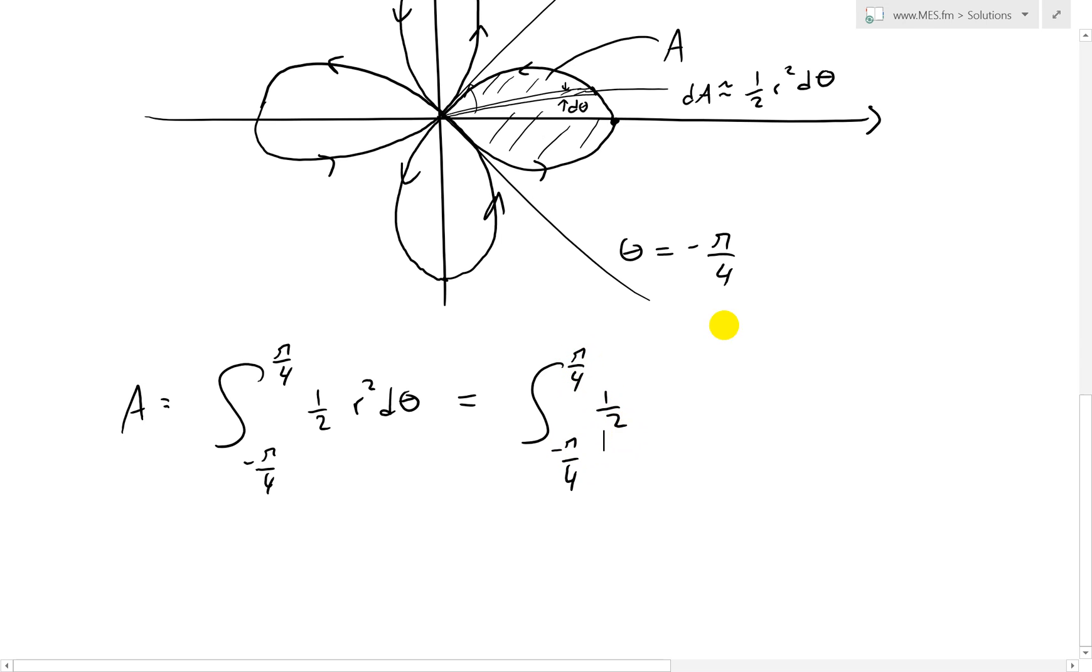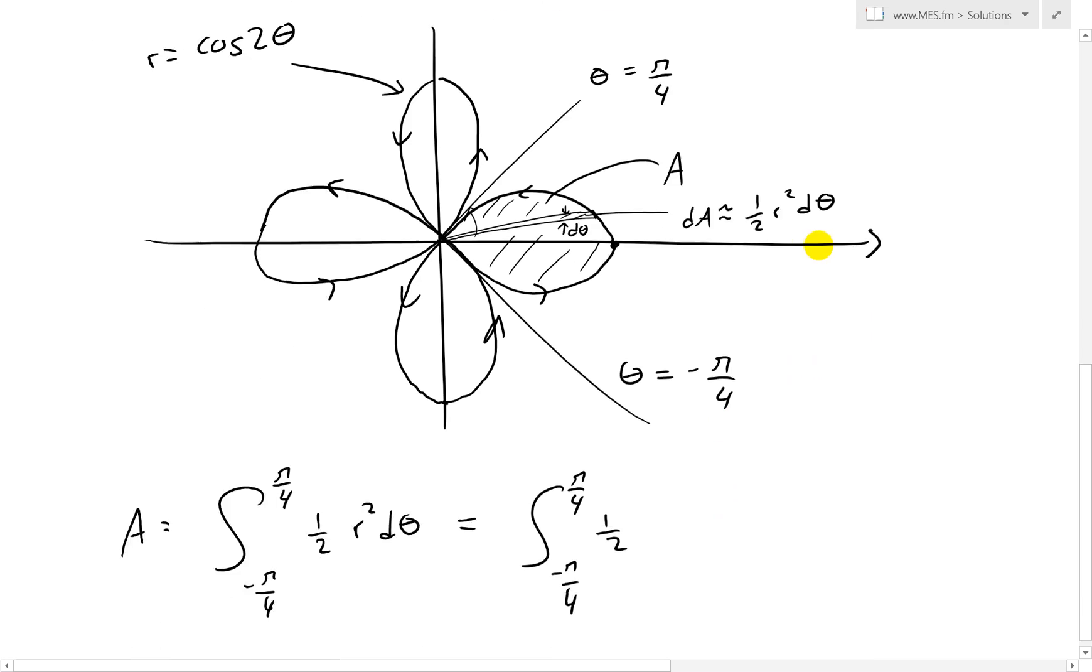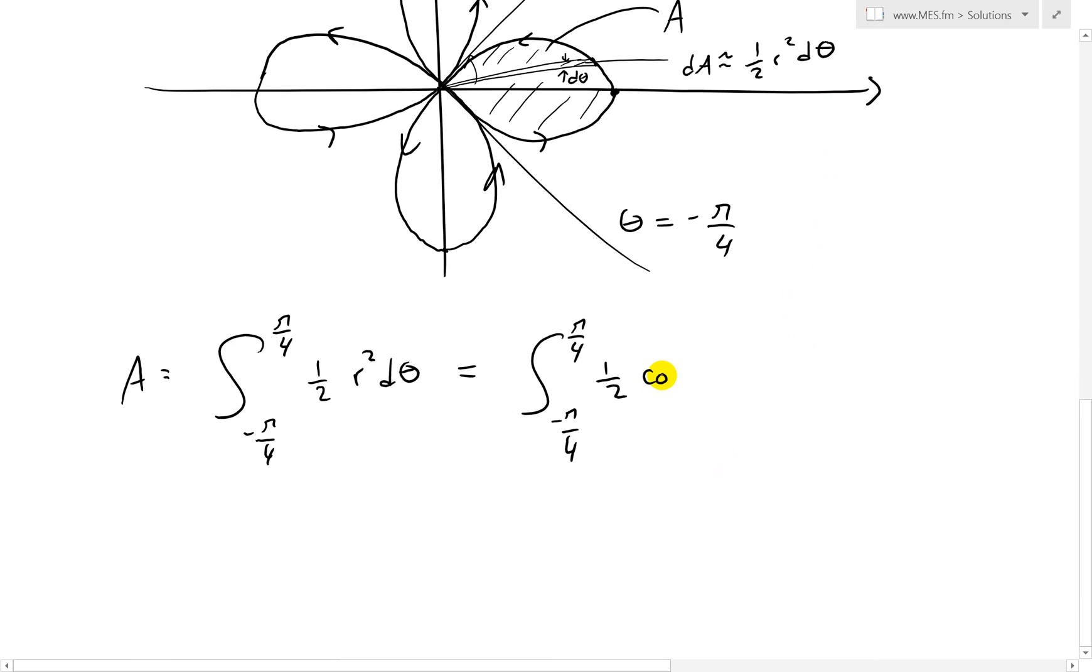And then one half. And then where r is 2 cosine 2 theta, we write cosine - it's going to be squared now, because we're squaring it - cosine squared 2 theta. I'll just put this in brackets like that, and then d theta over there.